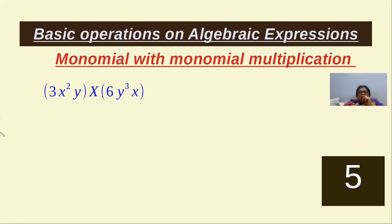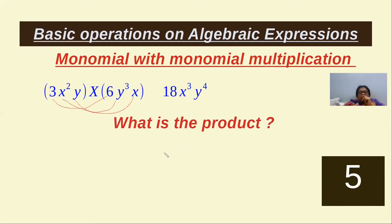Here is another problem: 3x²y into 6y³x. The answer is: 3 × 6 = 18; x multiplied by x² gives x³; and y × y³ gives y to the power of 4 — so total 4 y's. Now I'll give a test.